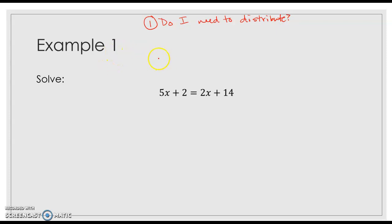If it's yes, distribute, then go to question two. If it's no, then go to question two. And question two is, do I have same side like terms? If yes, combine them and move on. If no, then move on to question three. And question three is, do I have variables on both sides? Those are our three questions.